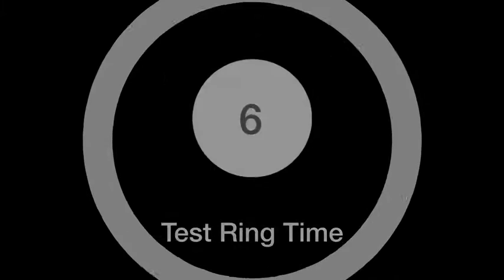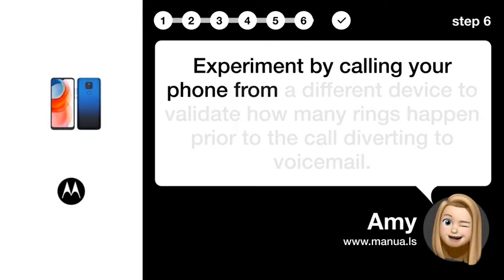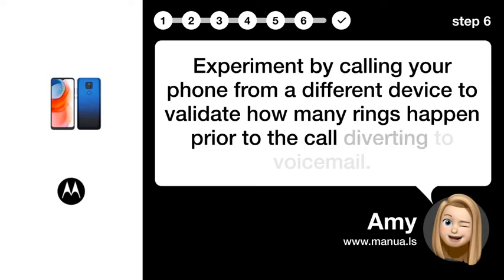Step 6: Test ring time. Experiment by calling your phone from a different device to validate how many rings happened prior to the call diverting to voicemail.